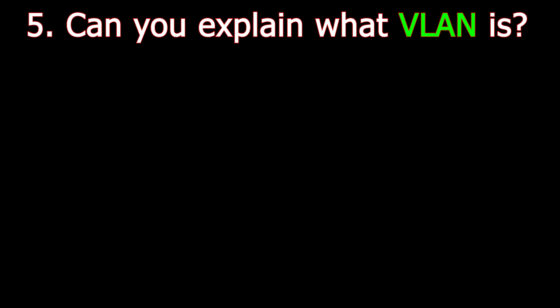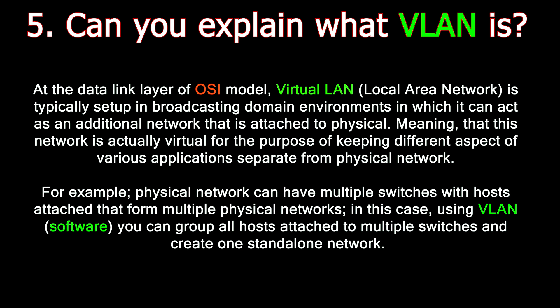Question number five: Can you explain what VLAN is? At the data link layer of the OSI model, a virtual LAN is typically set up in broadcasting domain environments in which it can act as an additional network attached to a physical one. This network is virtual for the purpose of keeping different aspects of various applications separate from physical. For example, a physical network can have multiple switches with hosts attached forming multiple physical networks. Using VLAN, you can group all hosts attached to multiple switches and create one standalone network.